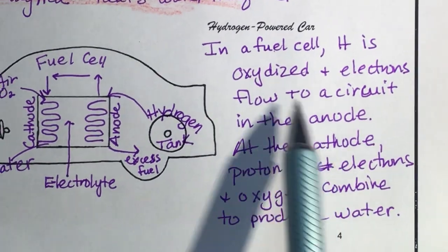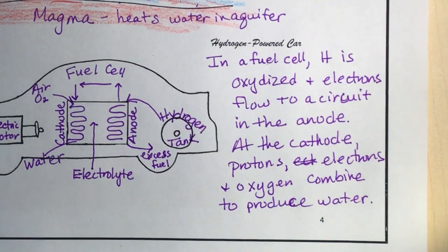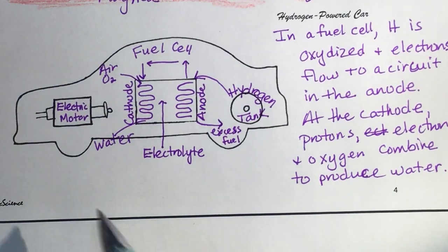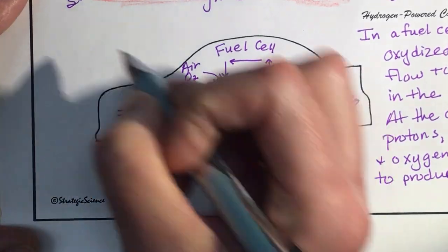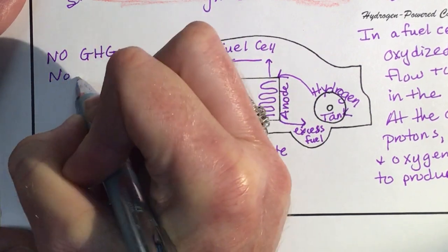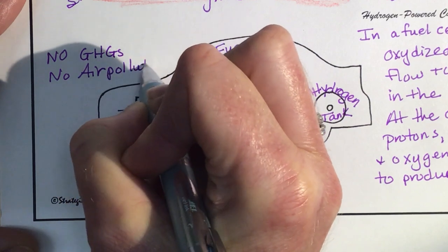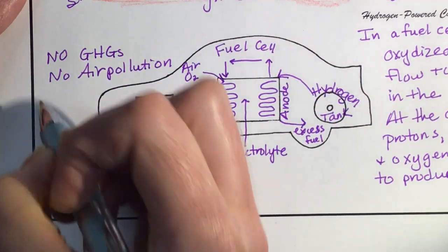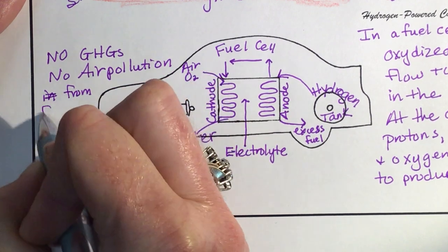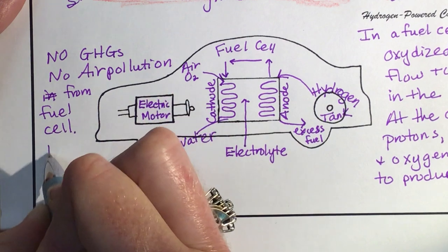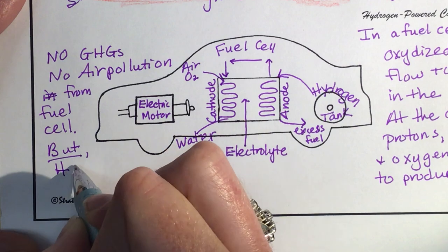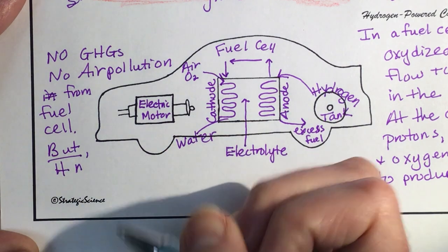You may need to pause the video to catch up. But in a hydrogen power car, the good parts here: there is no greenhouse gases and no air pollution from the fuel cell. But hydrogen needs to be made without fossil fuels to be sustainable.